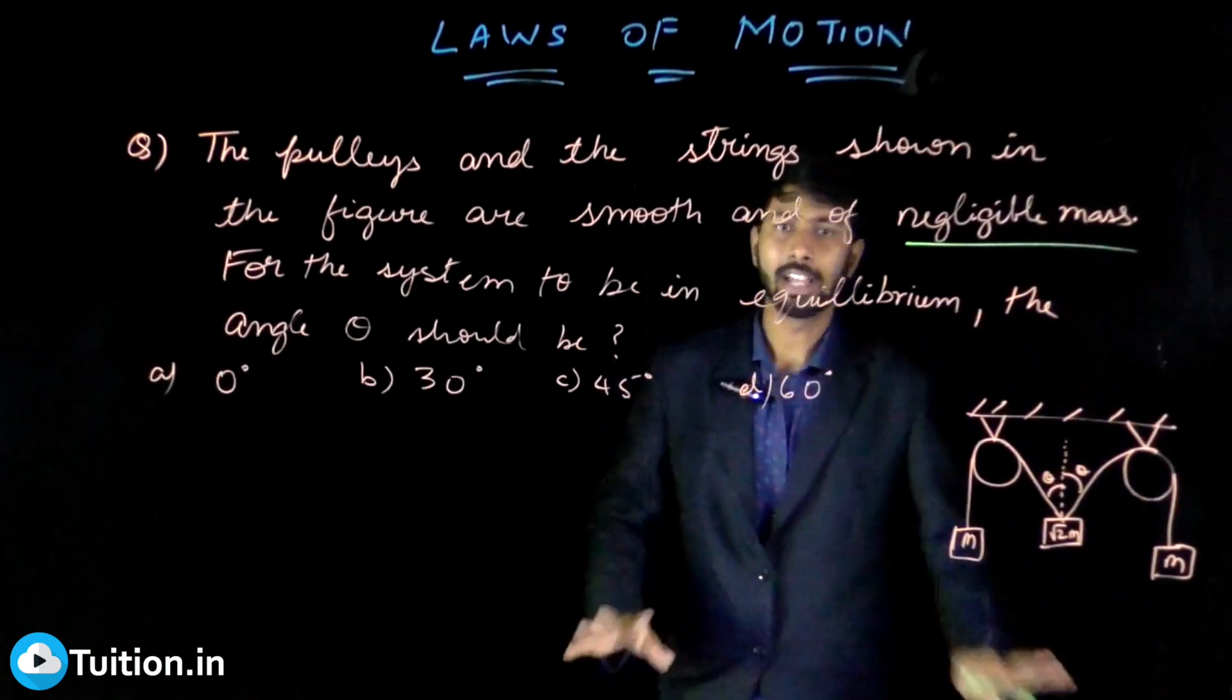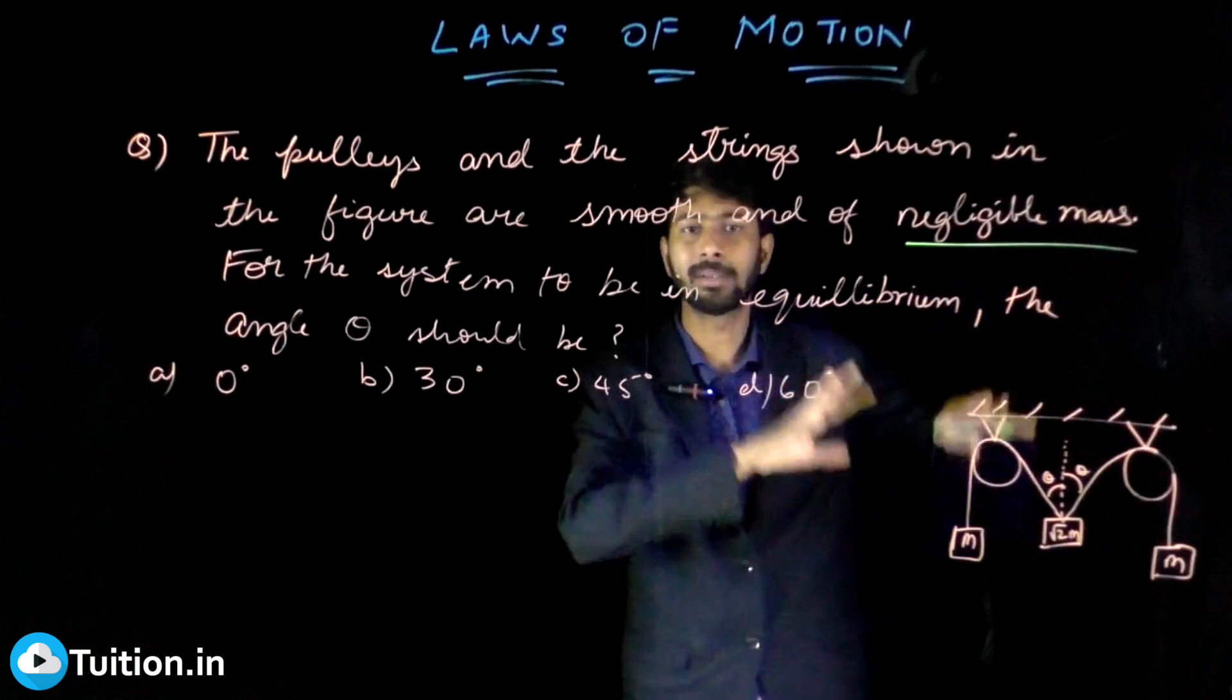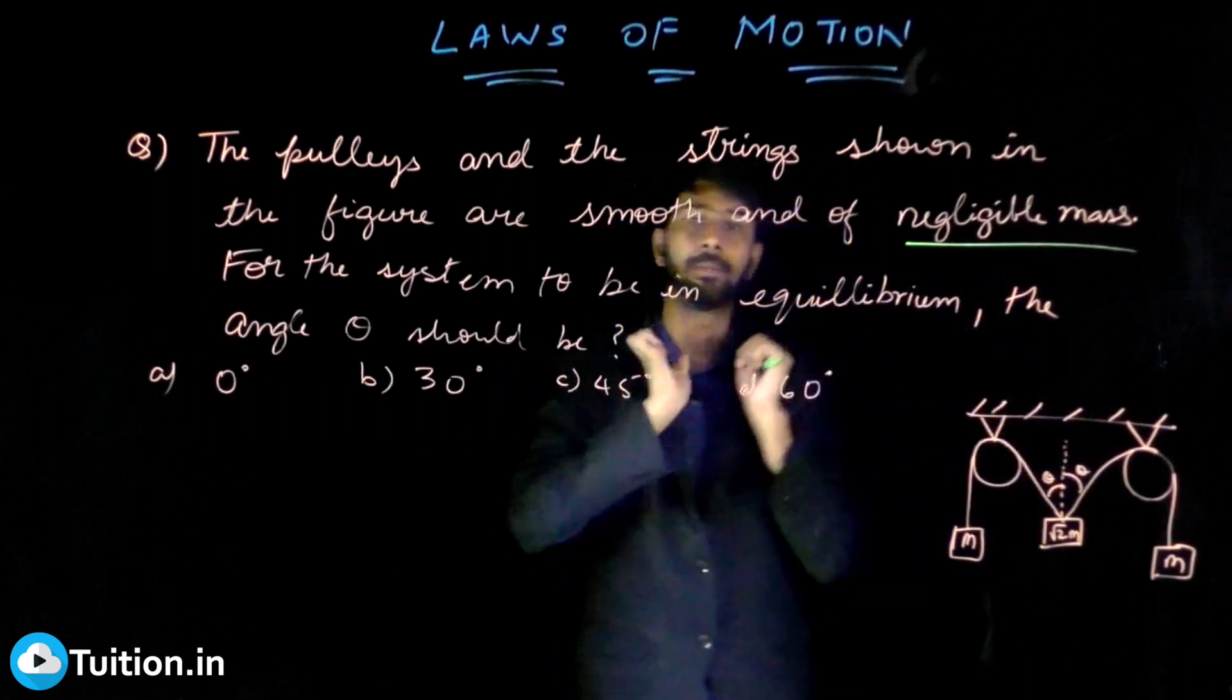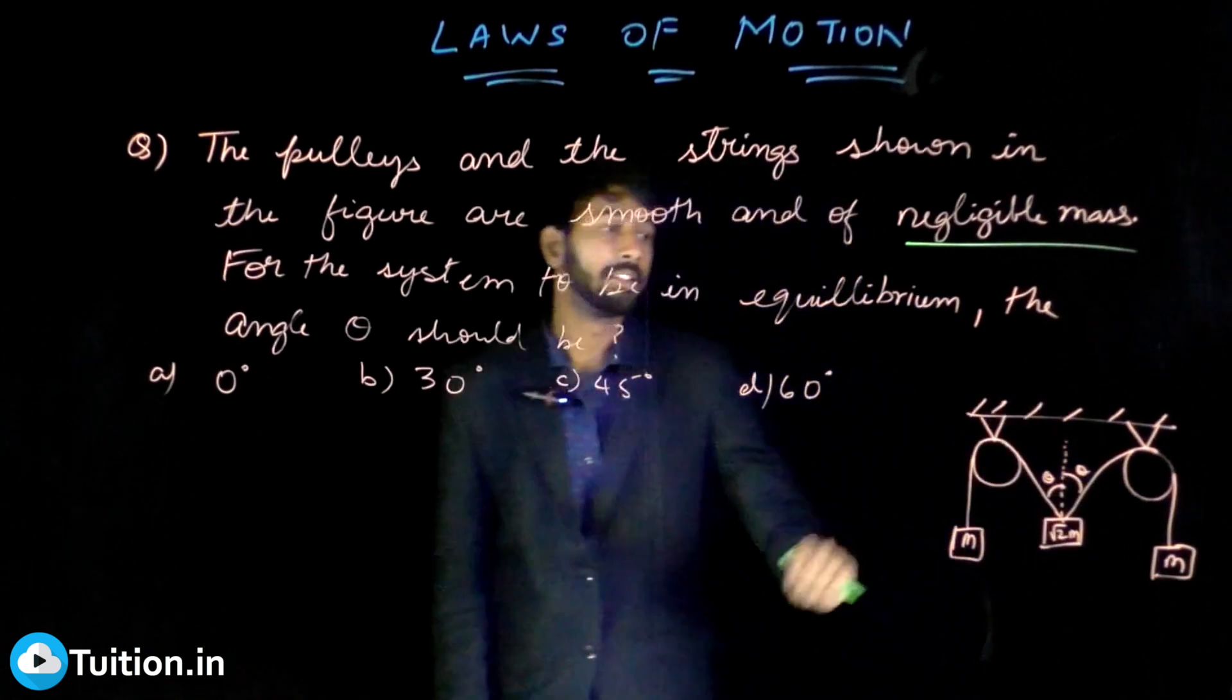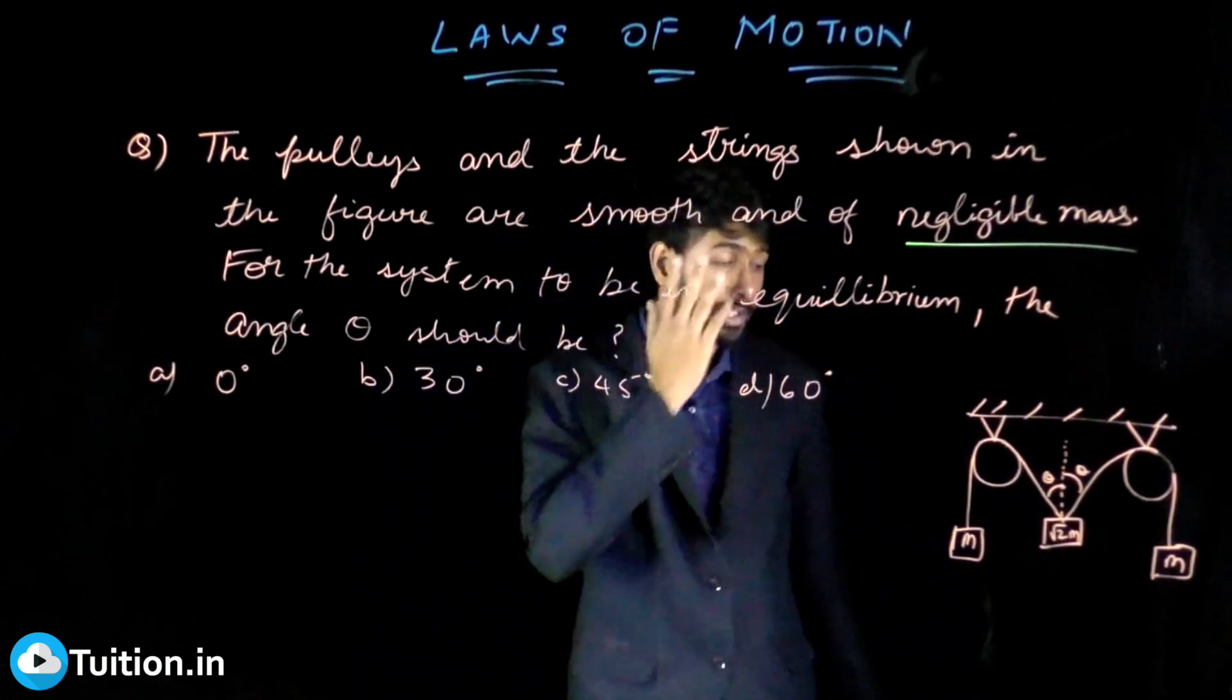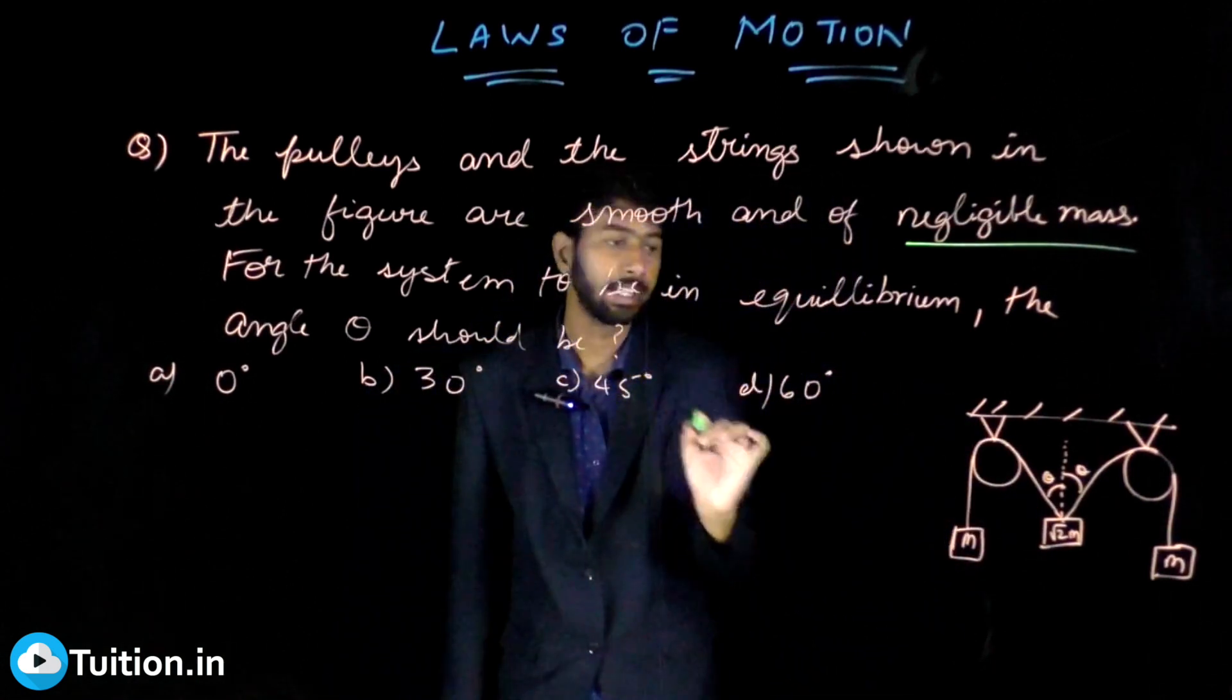So what is this theta in this form of equilibrium? For that we will start drawing the free body diagram for each block. Here you have this m. On m there is a tension which acts on the string T and mg acts on it.